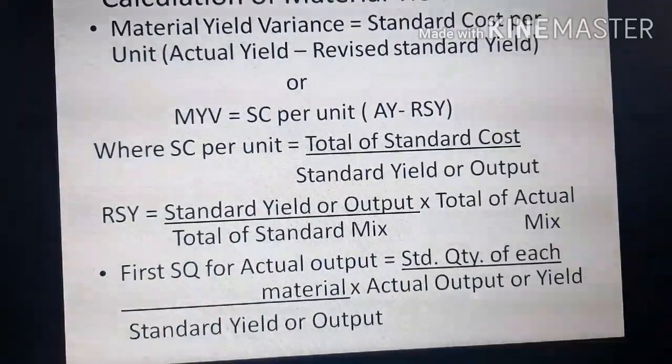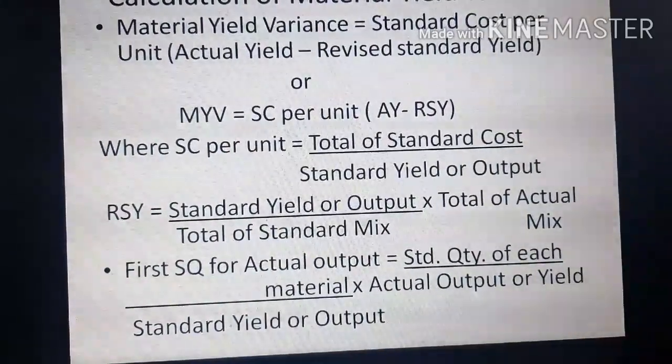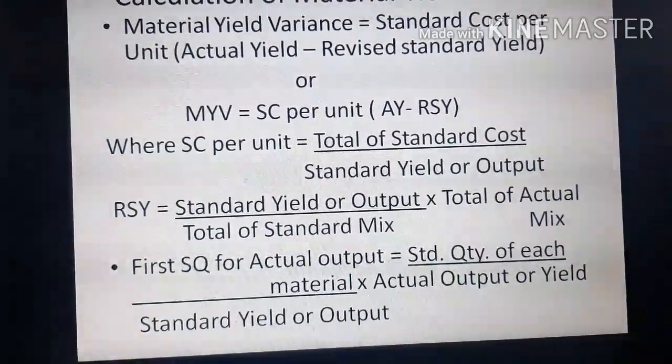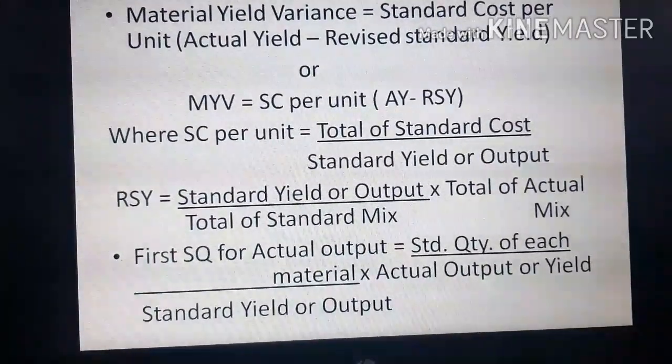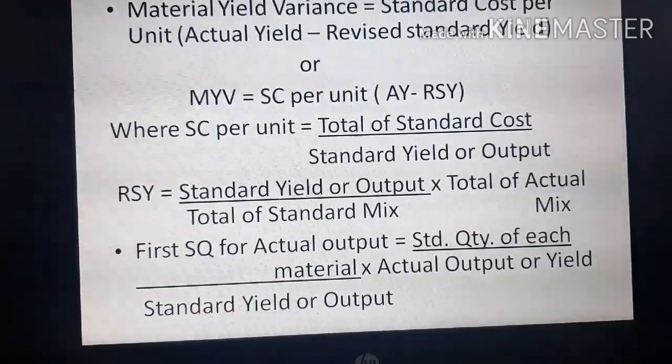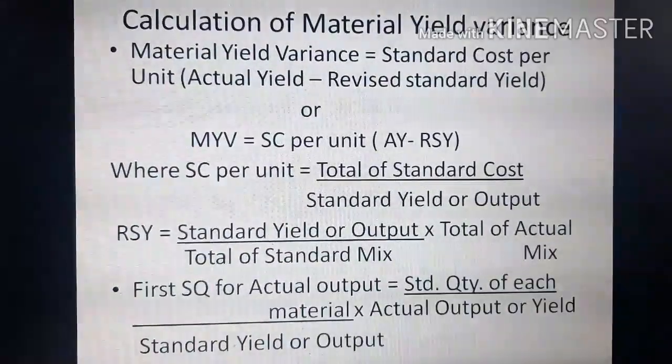First, Standard Quantity for Actual Output = Standard Quantity of each material × Actual Output or Yield / Standard Yield or Output.